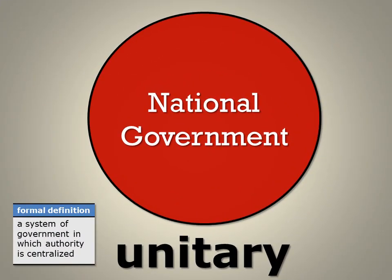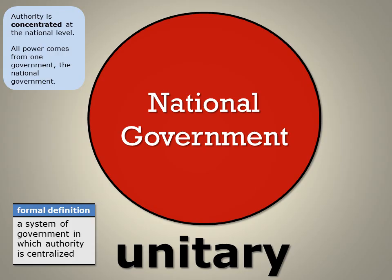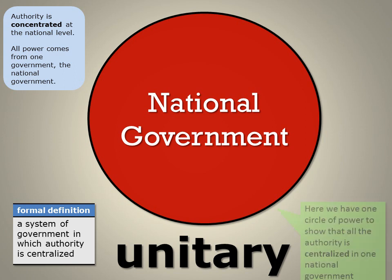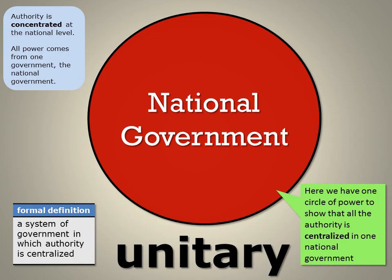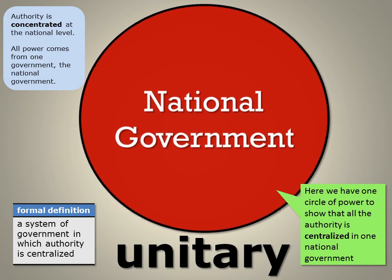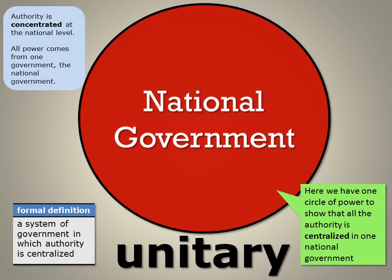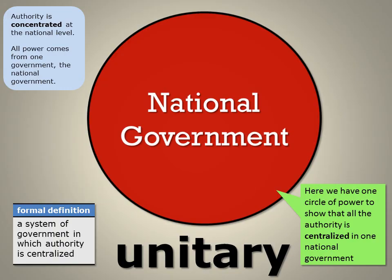The first system is a unitary system. Unitary is a system of government in which authority is centralized. Authority in a unitary system is concentrated at the national level. All power comes from one government — the national government. In our illustration, you can see one circle of power that shows that all the authority is centralized in one national government.